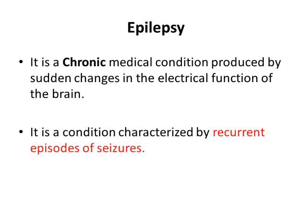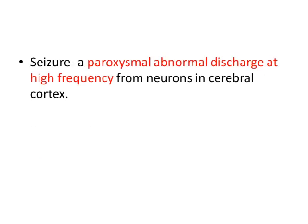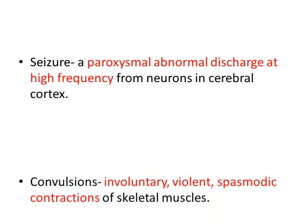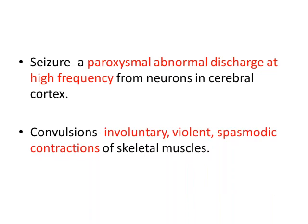Epilepsy is a chronic medical condition produced by sudden changes in the electrical function of the brain. It is a condition characterized by recurrent episodes of seizure. A seizure is basically a paroxysmal — meaning sudden — abnormal, high-frequency discharge of cerebral neurons. We need to differentiate it from convulsions or fits, which are involuntary, violent spasmodic contractions of skeletal muscles.